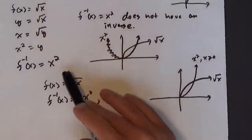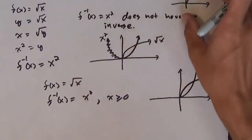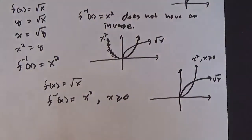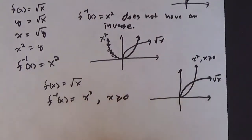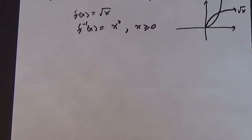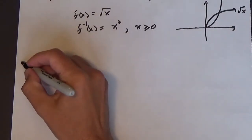While this doesn't come up all the time, it does come up: you have a function that has an inverse, but when you find the inverse, it doesn't have an inverse itself, so you have to restrict the domain. Now, what if we have a function that doesn't have an inverse but we want one? Let's look at an example of that.